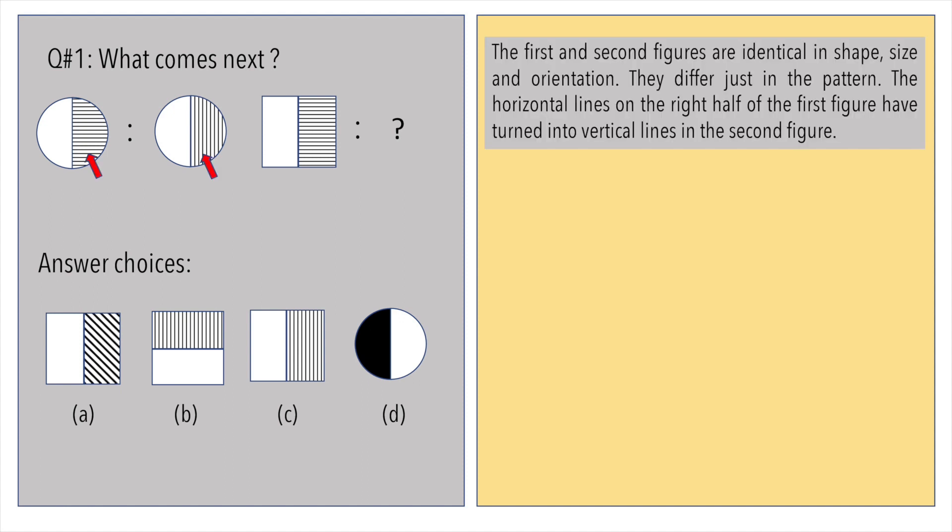The first and second figures are identical in shape, size, and orientation. They differ just in the pattern. The horizontal lines on the right half of the first figure have turned into vertical lines in the second figure.